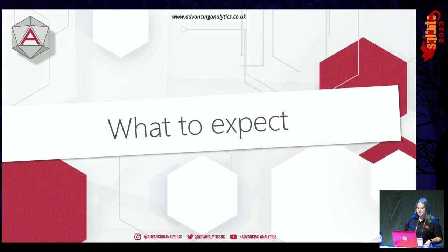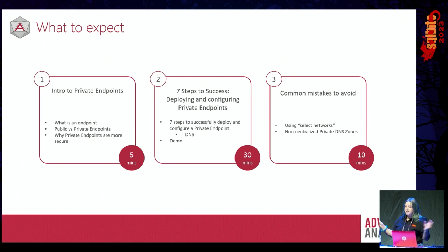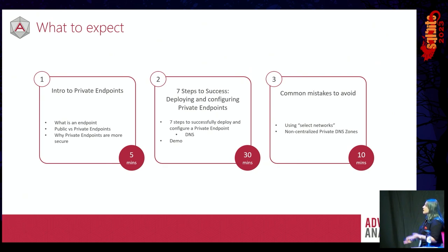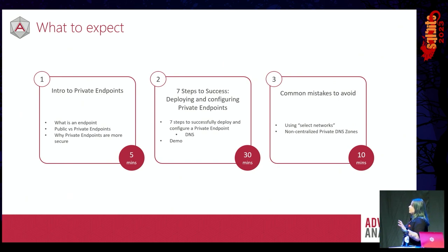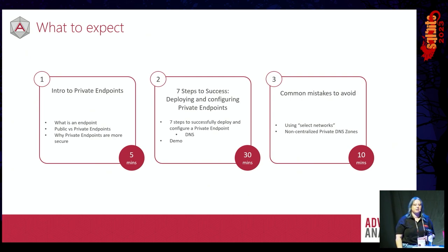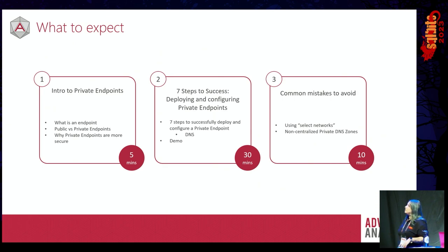So, what to expect from the talk today? I've split it into three main sections. Firstly, we're going to have a quick introduction into endpoints and the difference between public and private endpoints, to understand what a private endpoint is and why they are more secure — that's about five minutes. Then we're going to jump into the bulk of the talk, which I've called my seven steps to success, which I promise you is not a pyramid scheme or a cult. I just realized when writing this talk that there were exactly seven things you need for a successful private endpoint deployment.